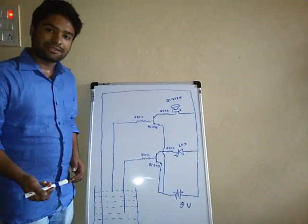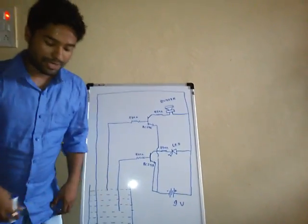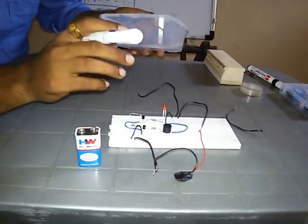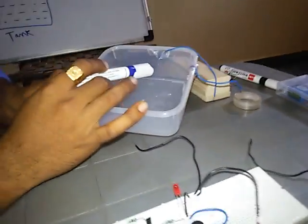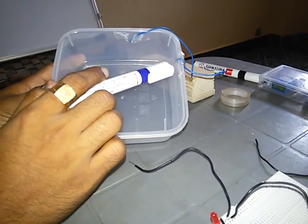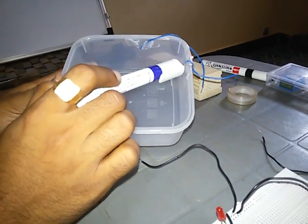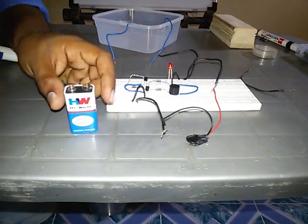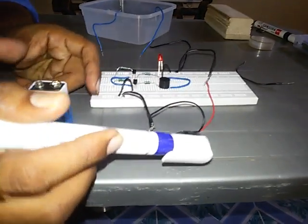In the second step we will see the hardware part of this project. We are using this tank, this is divided in two parts, this is the half level and this is a full level. This will be connected with LED and this will be connected with the buzzer. And these are the basic components of this project: 9 volt battery, battery cap, buzzer, LED, two BC548 transistors, four resistors.